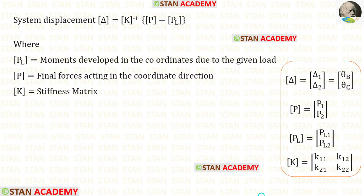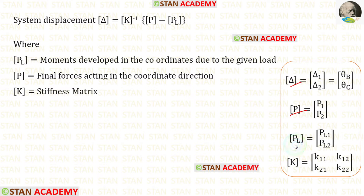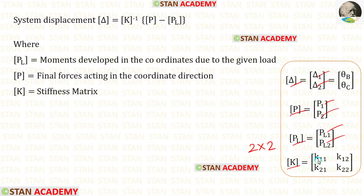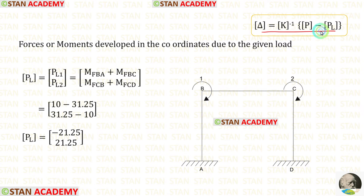We know the formula to find the slope values: the delta matrix equals K matrix inverse multiplied by the quantity P matrix minus PL matrix. In this analysis there are two coordinates, so inside the delta matrix, P matrix, and PL matrix there will be two values each. The size of the stiffness matrix will be 2×2 — two rows and two columns. Let us first find the PL matrix.